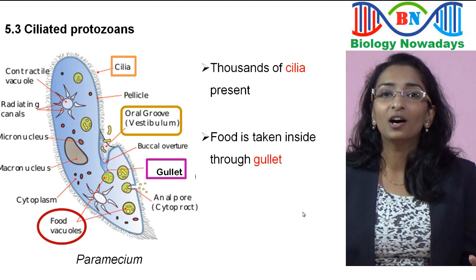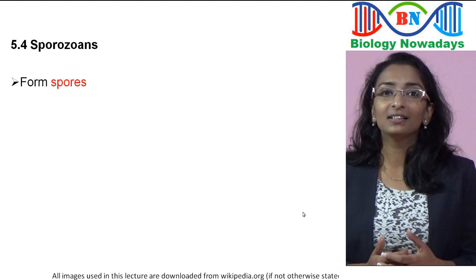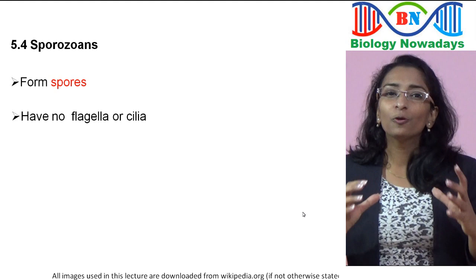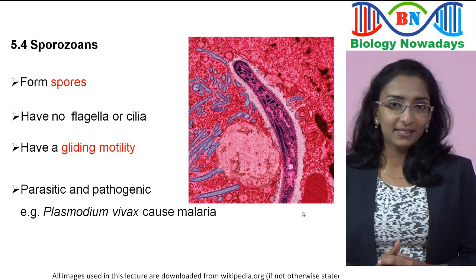The last group of protozoans — the sporozoans. They are called sporozoans because they form reproductive cells called spores. They don't have flagella or cilia for movement but show a gliding movement. They are parasitic as well as pathogenic. For example, Plasmodium vivax, the malarial parasite, causes malaria in humans.